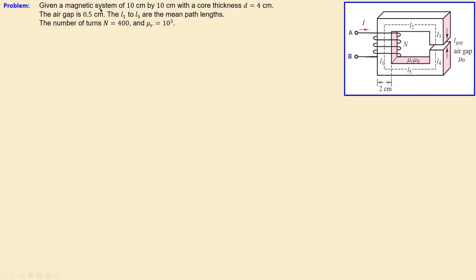The given magnetic system is 10 centimeters by 10 centimeters, with a core thickness of 4 centimeters. The air gap has a length of 0.5 centimeters. We also have path lengths L1 to L5 representing the mean path lengths, and the number of turns of the coil is 400.